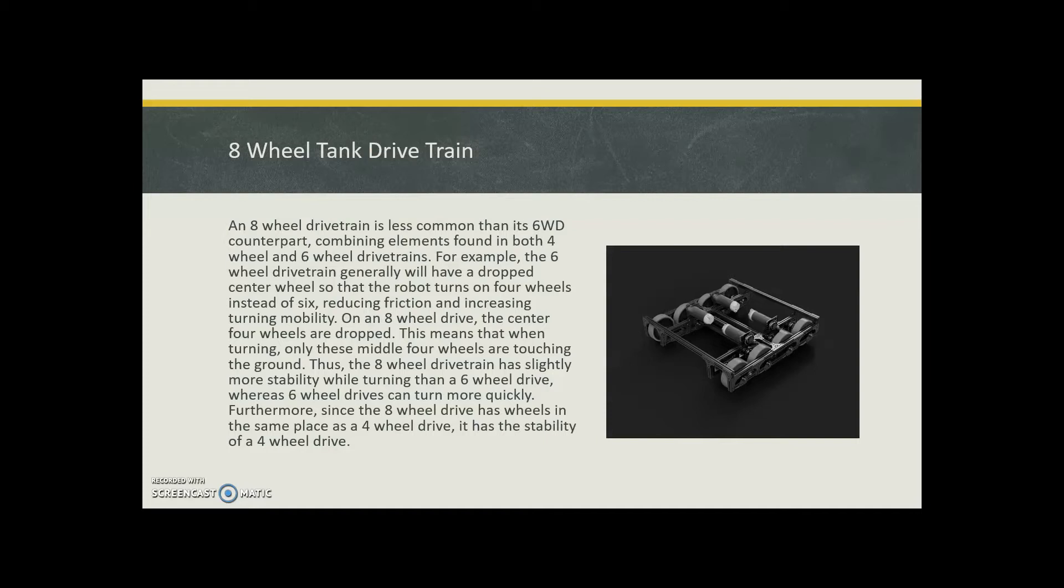In the eight wheel drive, the center four wheels are dropped, not two. This means when turning, only the middle four wheels are touching the ground. Thus the eight wheel drive train has slightly more stability while turning than six wheel drive, whereas six wheel drives can turn more quickly.